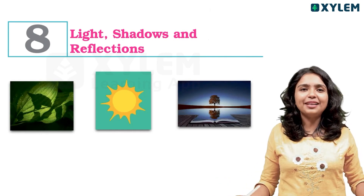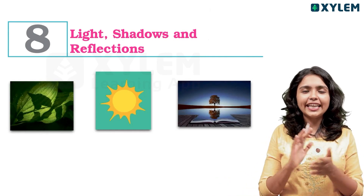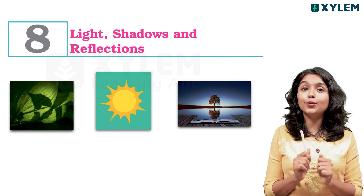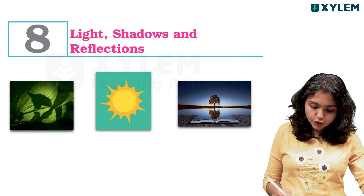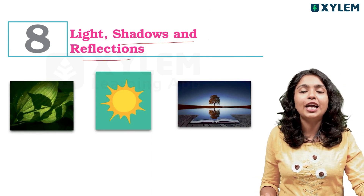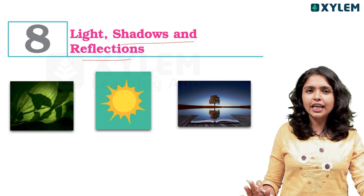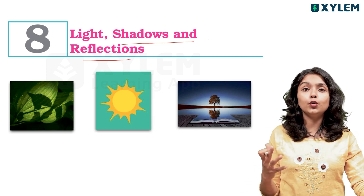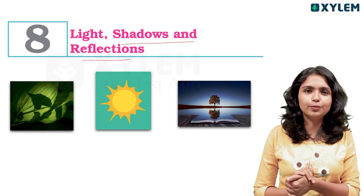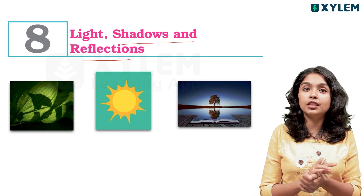Hello Makkali, welcome back to Zalem Learning. We are going to discuss all the unique things in our textbook. We are going to discuss the name of our unit: Light, Shadows and Reflection. We are going to take a look at some important things — what is a luminous object, what is a non-luminous object, transparent, translucent, and opaque objects.